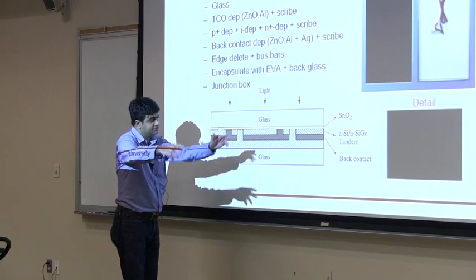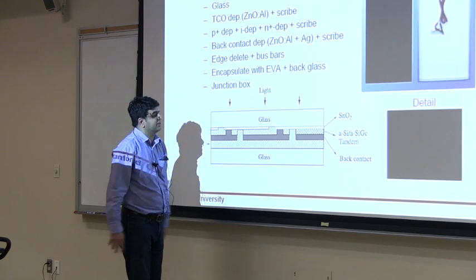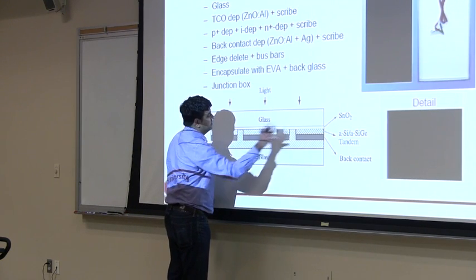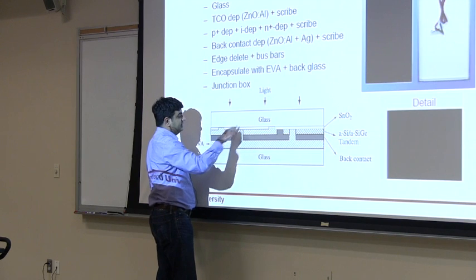So these are scribes of laser which come and cut your cell, and what it results in is individual blocks which are now connected in series.